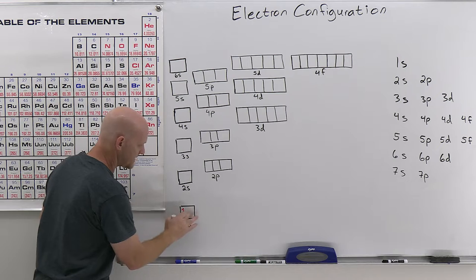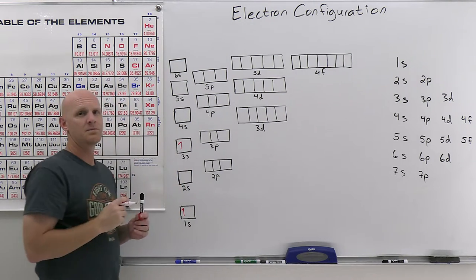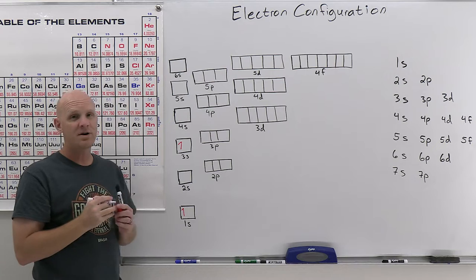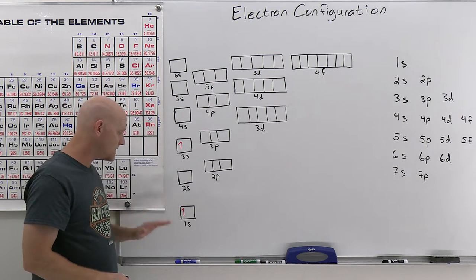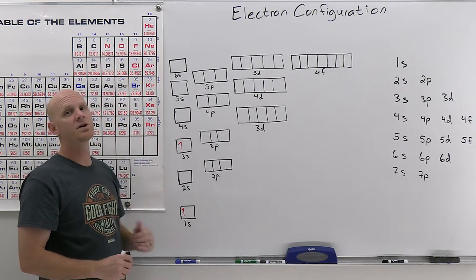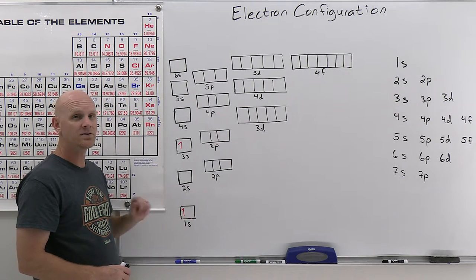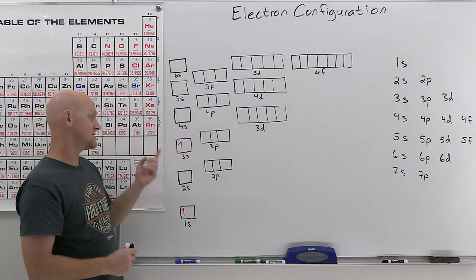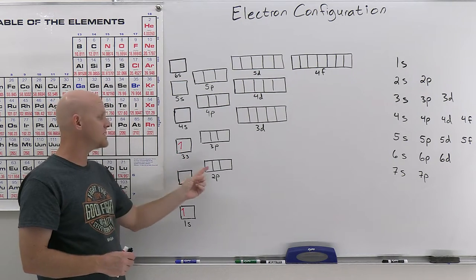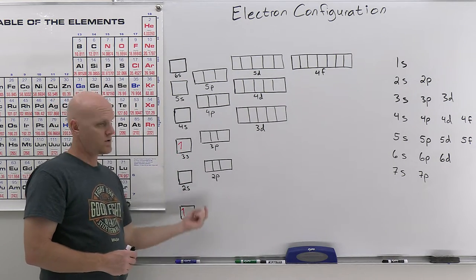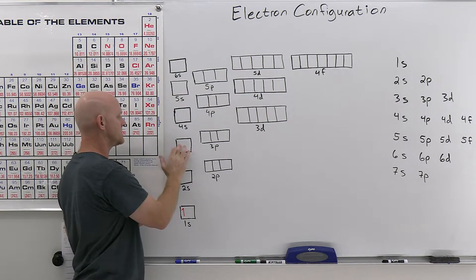What if instead of putting that second electron in the 1s, you put it up in the 3s? That would be a violation of the Aufbau principle, because it says you fill in the lowest energy orbitals first before working your way up to higher energy. You should have filled the 1s before moving upward, and even then you wouldn't jump to the 3s — you'd go to the 2s then the 2p, just in order of increasing energy.